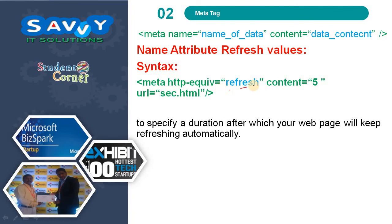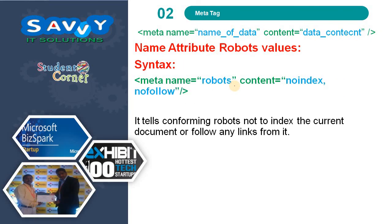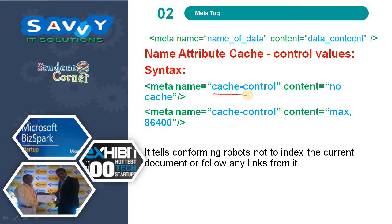Cookie means storing cookies on the client side, and later this information can be used by the web server to track a site visitor — including when it expires, when it starts, and the user ID. Author we have already discussed. Robots tells search robots not to index the current document or follow any links from it. Cache control means when the web server is not working, with the help of cache control we can retrieve the last updated web page content and view it.